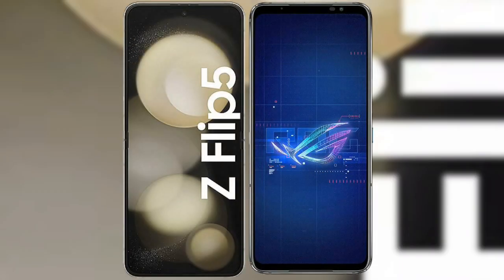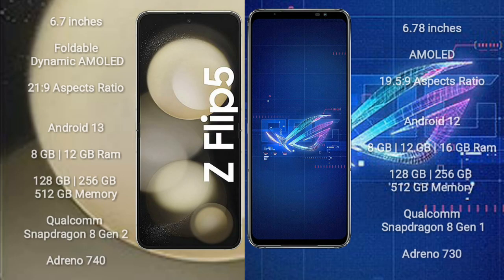I will compare the new Samsung Galaxy Z Flip 5 with the Asus ROG Phone 6. Samsung Galaxy Z Flip 5 comes with a 6.7-inch foldable Dynamic AMOLED display with an aspect ratio of 22:9. Asus ROG Phone 6 comes with a 6.78-inch AMOLED display with an aspect ratio of 19.5:9.